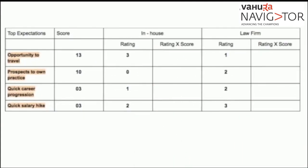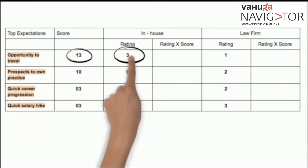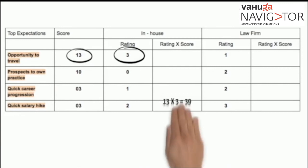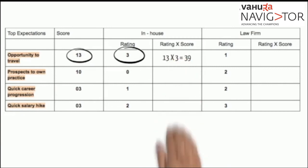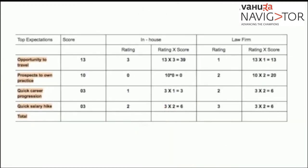For example, the score for opportunity to travel is 13 and the rating for in-house is 3, so the cumulative score will be 13 × 3 = 39. Reshma will have to do similar calculations for all the expectations and options.